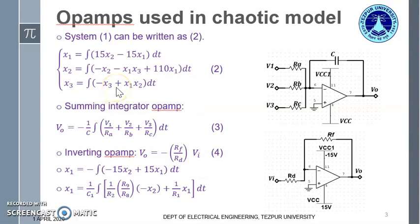Number 1 is the summing amplifier or the summing op-amp. Number 2 is the integrator or the integrating op-amp and number 3 is the inverting op-amp. We can use an amplifier that performs both the functions of addition as well as integration. So it is the summing integrator op-amp. And the equation is given as V0 equals minus 1 by C integration of V1 by Ra plus V2 by Rb plus V3 by Rc.